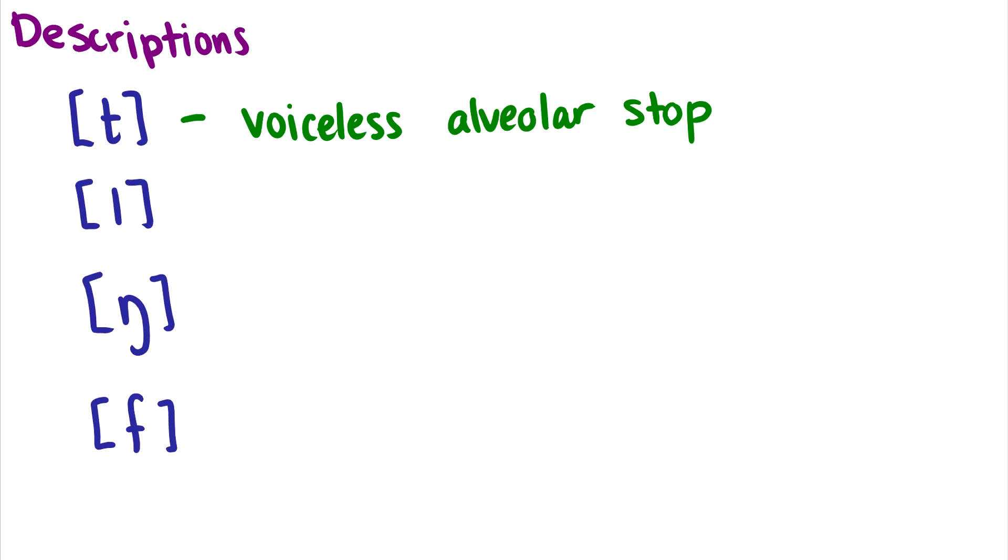Okay, so that's some practice with transcribing consonants. The next thing we want to practice, which is something we didn't really cover in the video, are descriptions. So with every sound, you can give it a description based on the voicing, the place, and the manner. And if you include those three, you have a description for a sound. So for instance, a T, T is voiceless, it is alveolar, and it is a stop. So we call this a voiceless alveolar stop. Now you can pause the video and you can try the rest, or I can just run you through it. It's up to you.